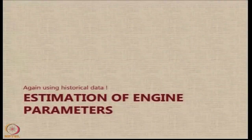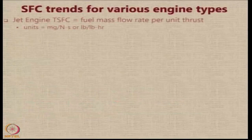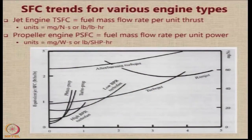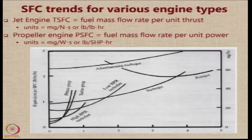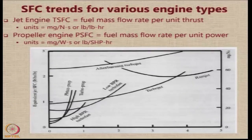Let us look at how to get the SFC values in cruise and loiter. Again we have to take recourse to historical data. The SFC values — this is a chart from Reimers textbook where the equivalent jet SFC values are plotted against the Mach number for various types of aircraft. With this chart you can get a rough idea, but this is just an indication. This chart helps you decide which kind of engine is to be used depending on the cruise Mach number or the maximum Mach number that you want the aircraft to achieve.